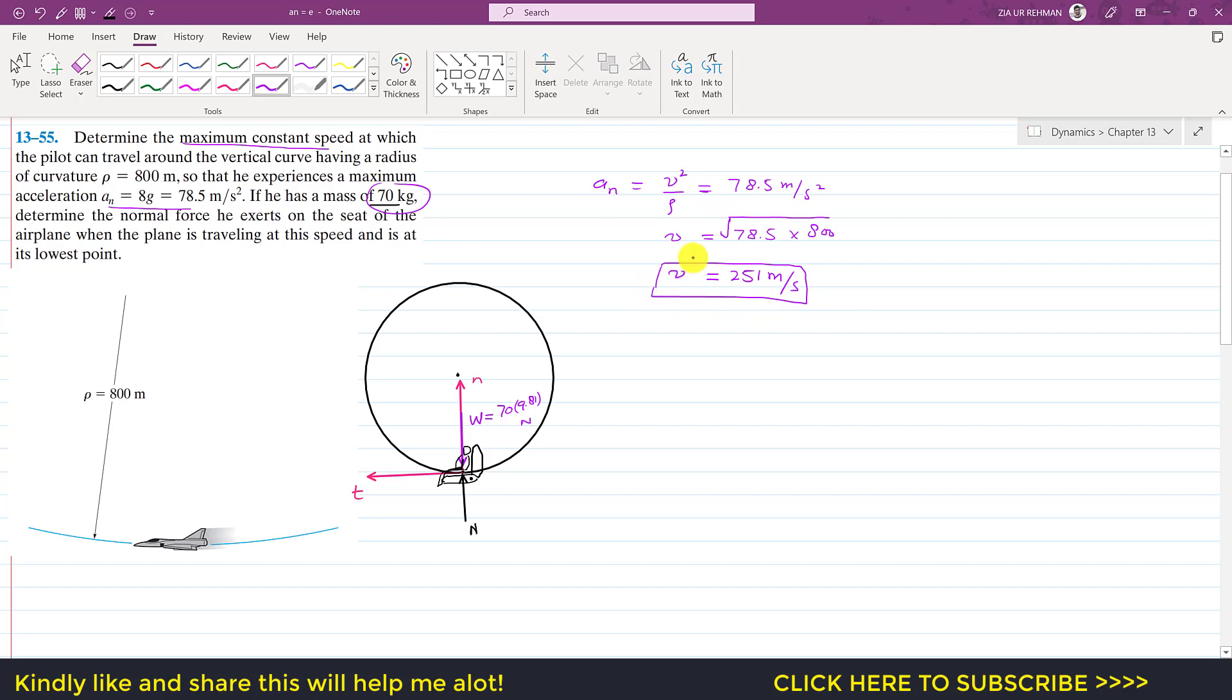Now we need to find this normal force. So if I apply the equation of motion in the normal direction, if we apply the summation of forces along n, so this will be equal to m a_n.